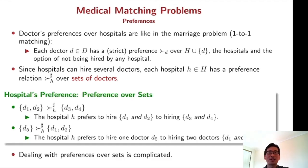So for instance, a certain hospital H prefers to hire D1 and D2 over hiring D3 and D4. That could be possible. On the other hand, the hospital may prefer to hire just one doctor D5 over hiring two doctors D1 and D2.